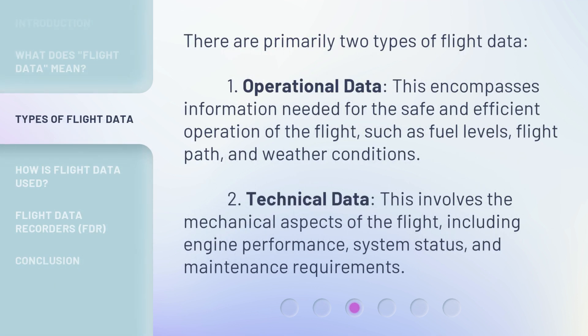There are primarily two types of flight data. One: operational data. This encompasses information needed for the safe and efficient operation of the flight, such as fuel levels, flight path, and weather conditions.